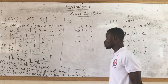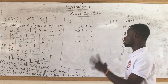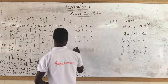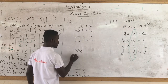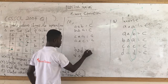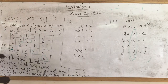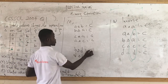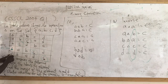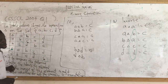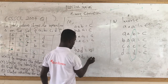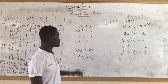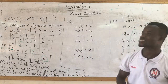Let's add one more example. Pick B and D. B delta D = A, and D delta B = A. Now you can conclude that the operation delta is commutative, since swapping the elements gives the same result each time.